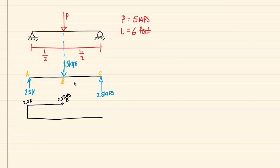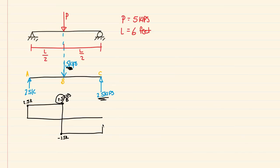At point B, the 5 kip force pushes the shear diagram back down. Taking 2.5 and subtracting 5 gives us negative 2.5 kips. There are no forces between points B and C, so we have constant shear at negative 2.5 kips all the way to point C. Then the 2.5 kip reaction at C pushes the shear back up to 0 — negative 2.5 plus positive 2.5 equals zero. This is our shear diagram.